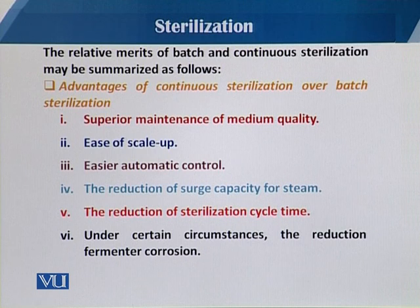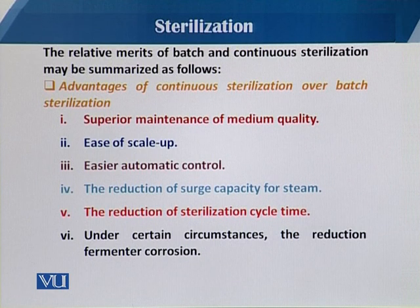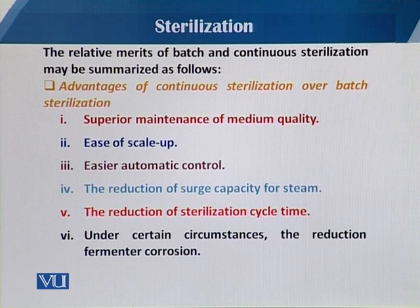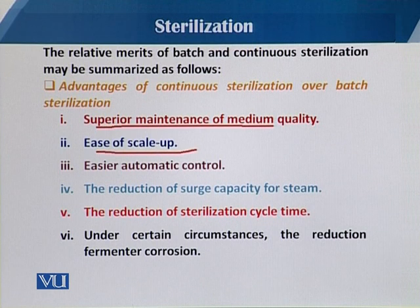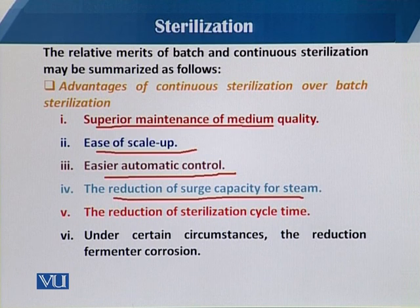In batch sterilization, we sterilize all the medium at the same time. In continuous sterilization, we sterilize the medium in a stream and then gradually feed it into the fermenter. Continuous sterilization is superior for maintaining medium quality because we can apply a high temperature for a short time. Additional advantages include easier scale-up, easier automatic control, reduction of surge capacity for steam, and reduction of sterilization cycle time.